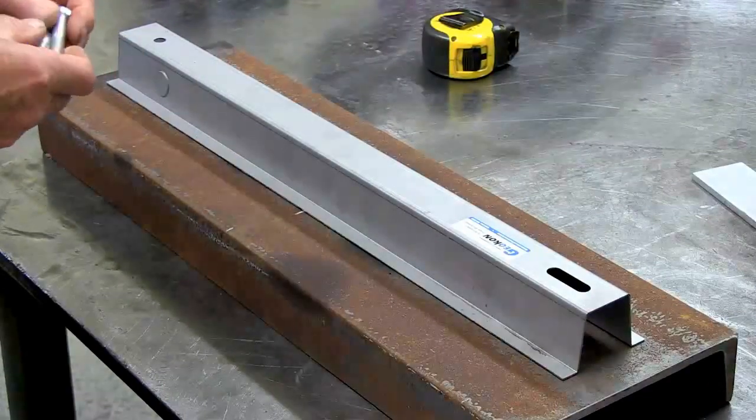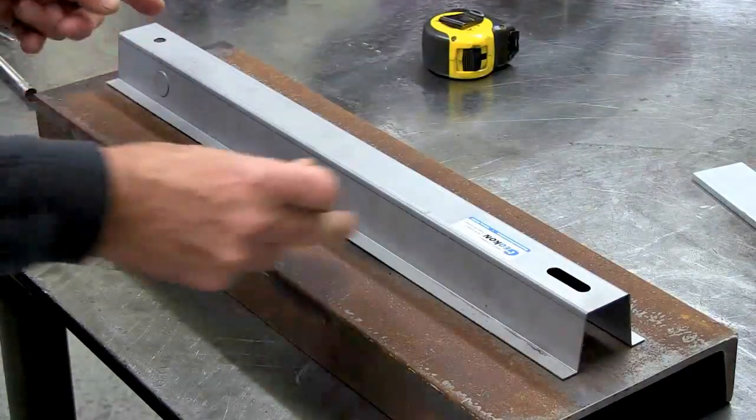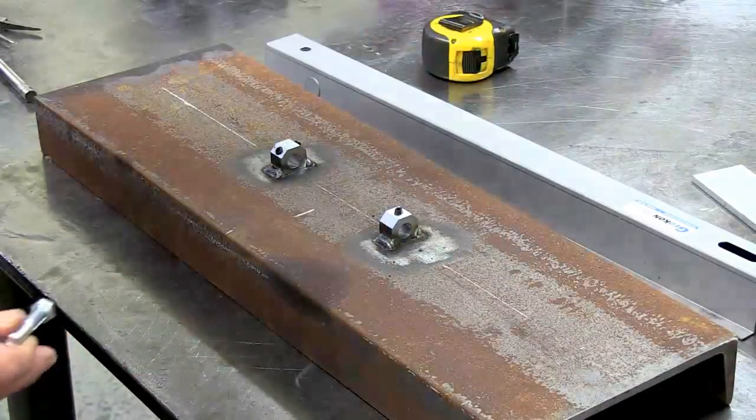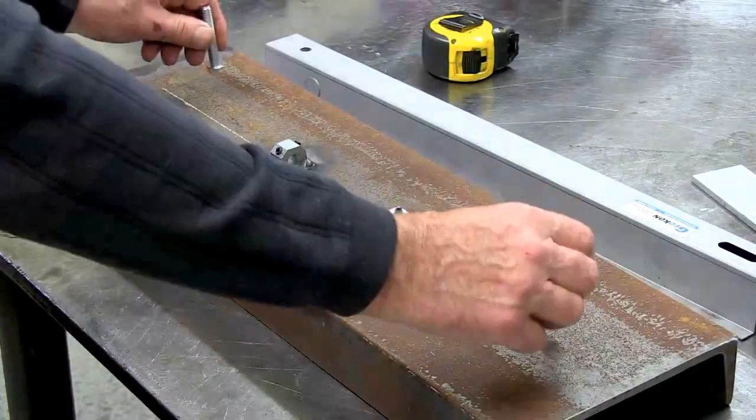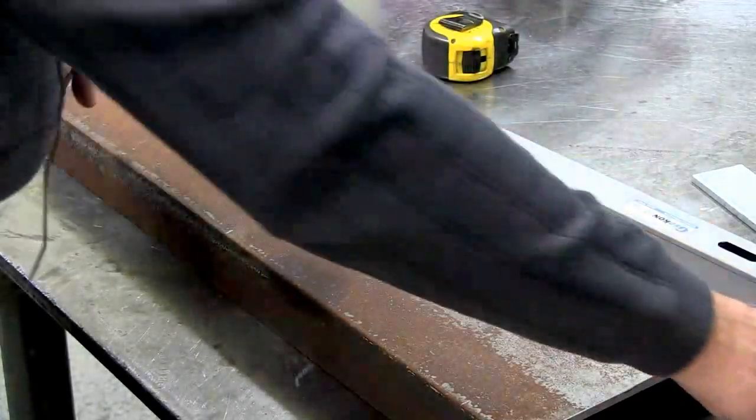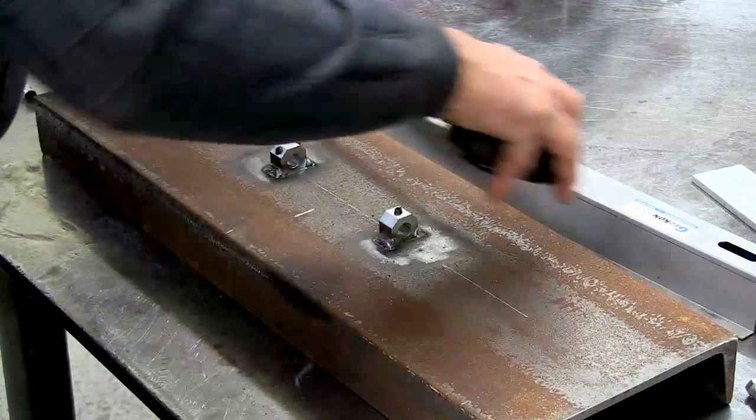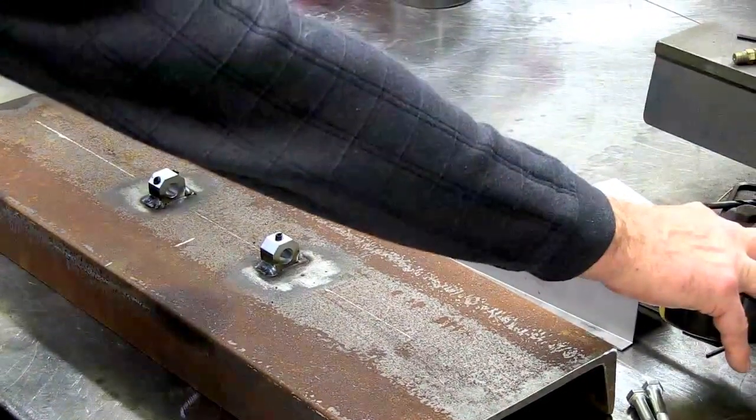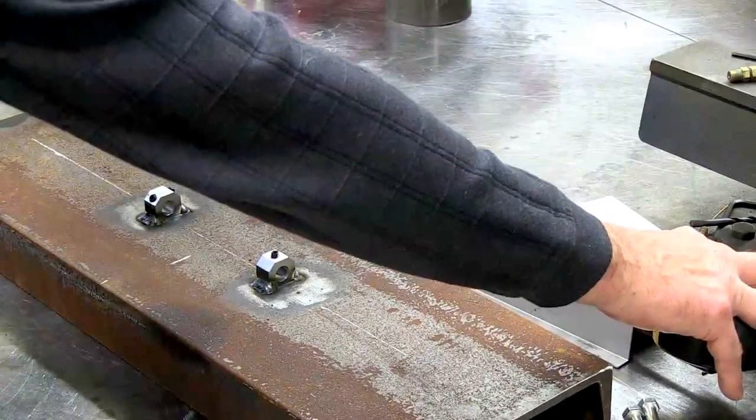What we're going to do is measure the distance from here to here, mark it on our center line, weld these bolts down, and they'll be used to hold the cover in place. The first thing to do is get this distance from the center of that to the center of that, about 21 and a quarter inches.